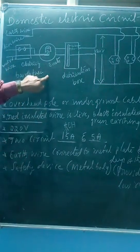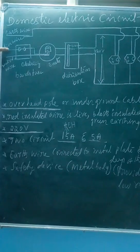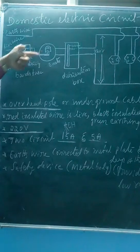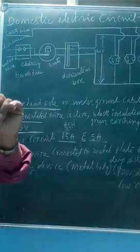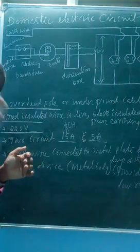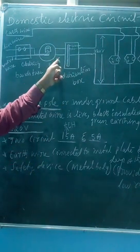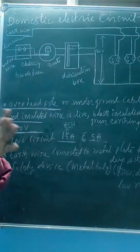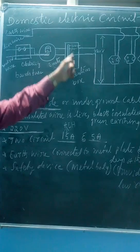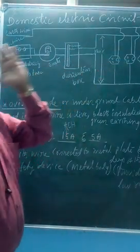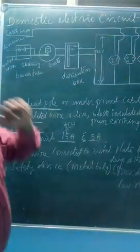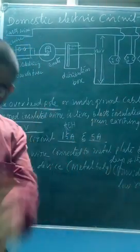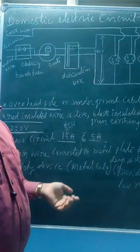This is about the domestic circuit — hope you understood. There are three types of wires: live, neutral, and earth. The switch is connected to the live wire. In the distribution box there are dipole switches (DP) and single pole switches (SP). In a parallel connection, even if one device is defective, the other devices work as usual. That is the advantage of parallel connection.